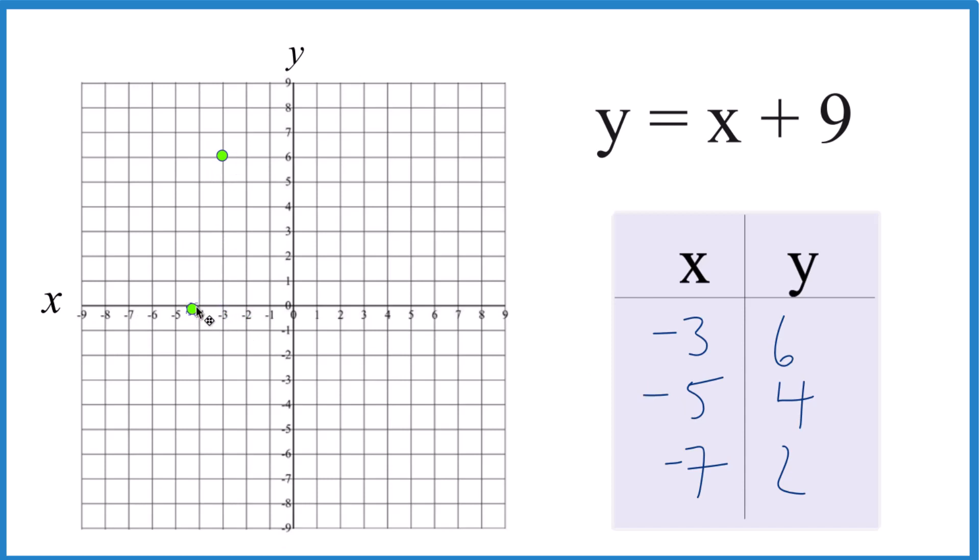Negative 5 for x and 4 for y. You can see they line up there nicely, but it's good to have a third point. Negative 7 for x and then 2.